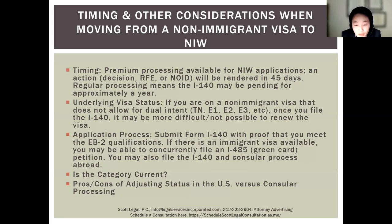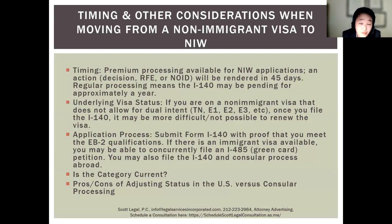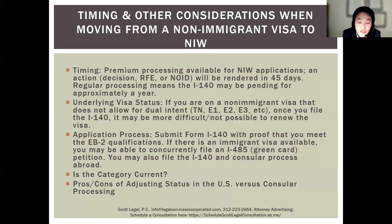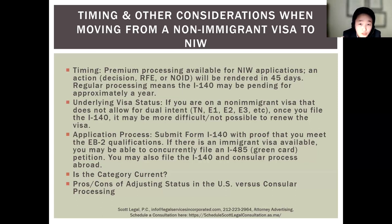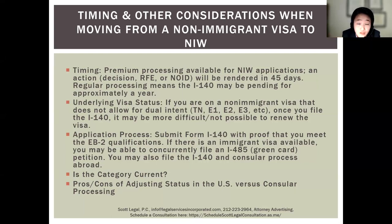In order to file the I-485, immigrant visas must be available in that category and your priority date must be current. Consular processing means working with your home country consulate — you attend an interview, receive a visa stamp, and enter the U.S. as a landed immigrant. Timing for either the I-485 or consular processing can take many months, around a year, depending on workload. For most countries, EB-2 NIW priority dates had always been current — meaning no backlog — but since the end of 2022, that has changed.